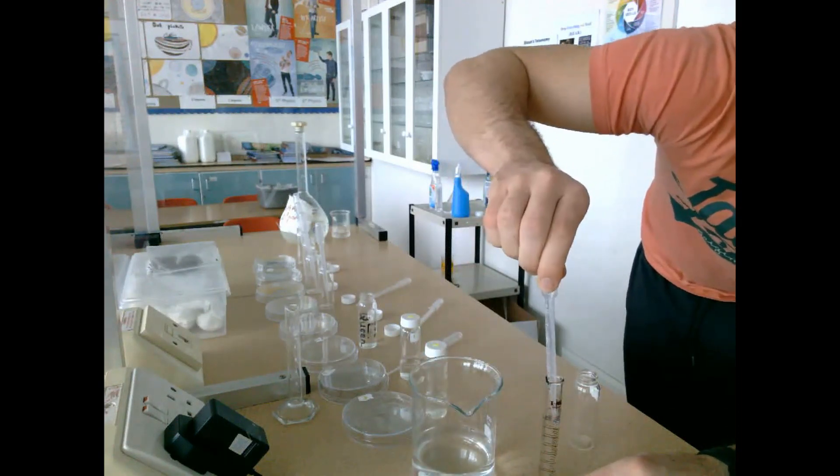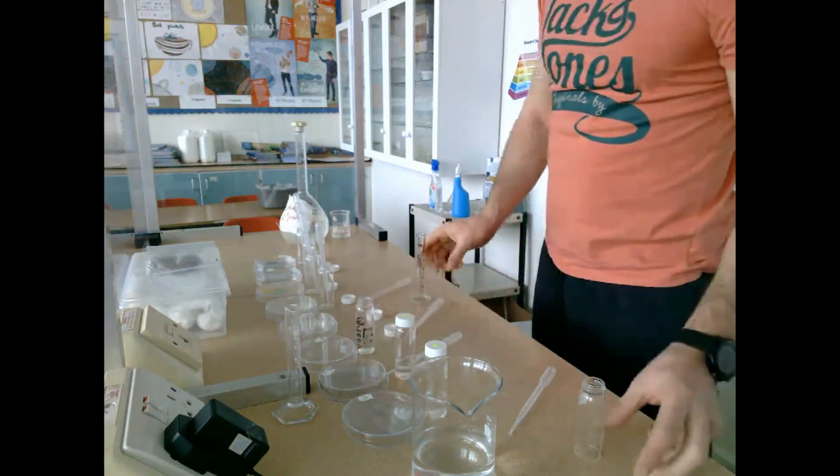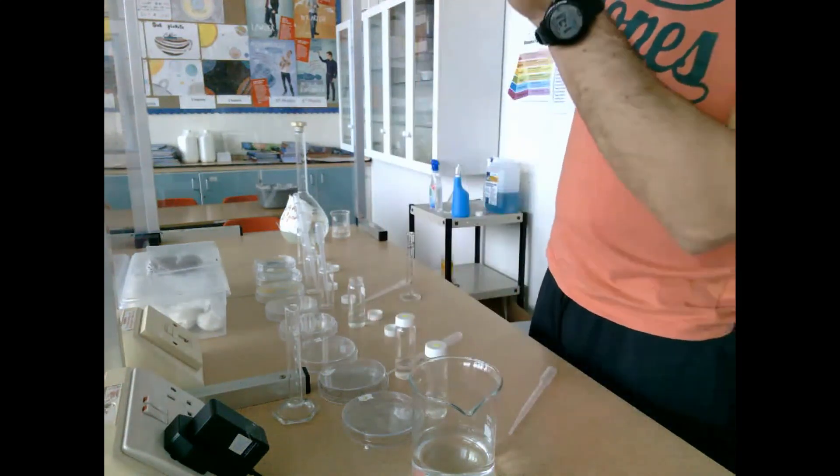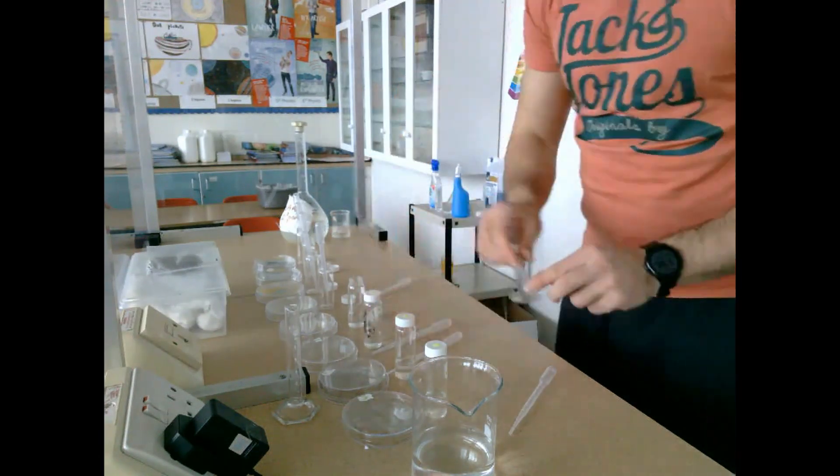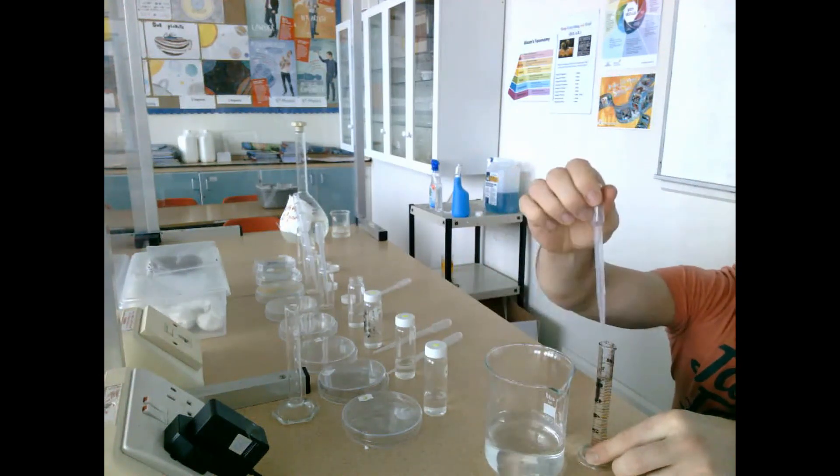For each new glass jar, we add nine milliliters of water. Then we go to the previous glass jar, take a dropper, remove one cubic centimeter, and add it to the glass jar we just filled with nine milliliters of water. This continues from glass jar number one all the way through to glass jar number eight.